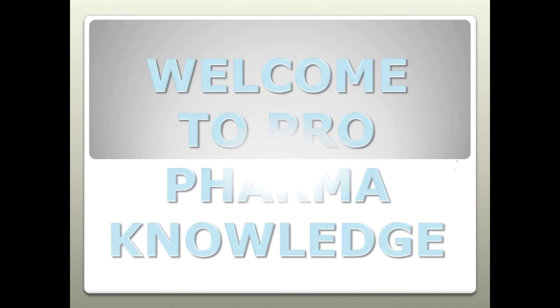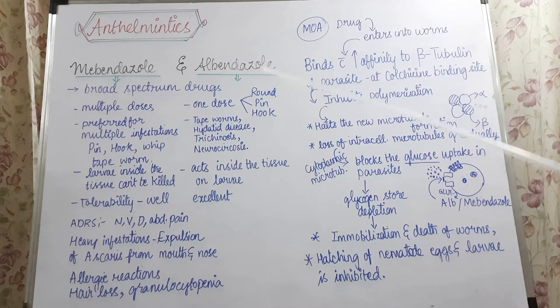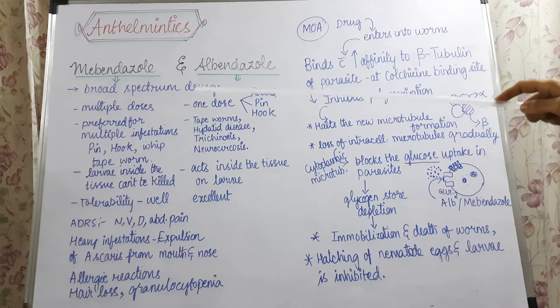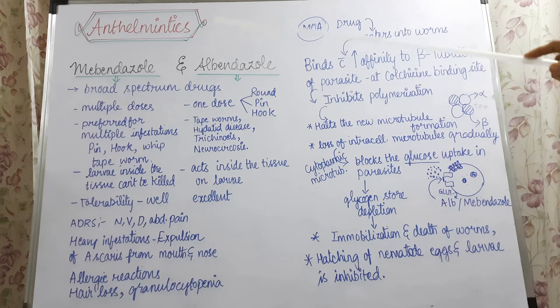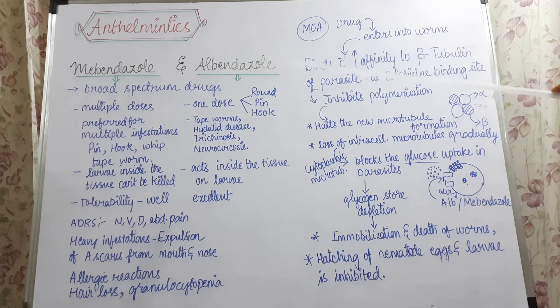Welcome to Profarma Knowledge. Let us go through mebendazole and albendazole in anthelmintic drugs. Both of them are broad-spectrum anthelmintics and they have various differences between them. Mebendazole is somewhat inferior and albendazole is superior when compared with mebendazole.